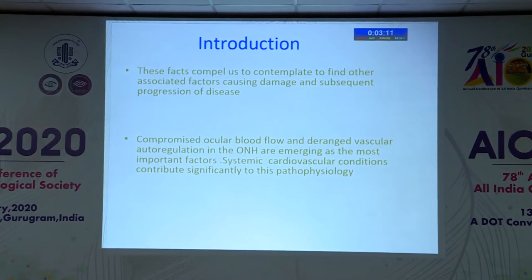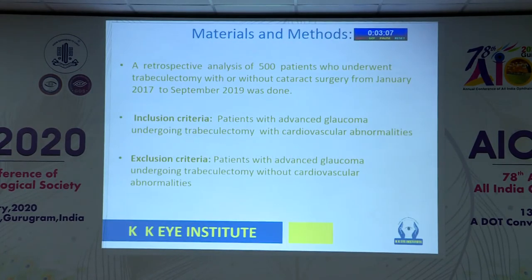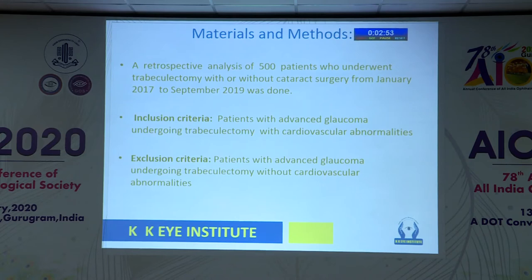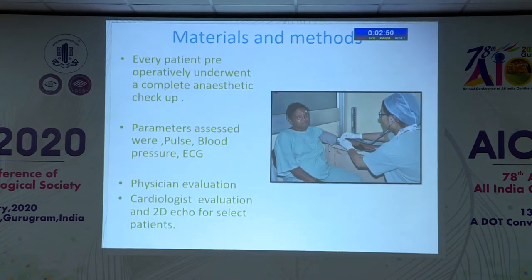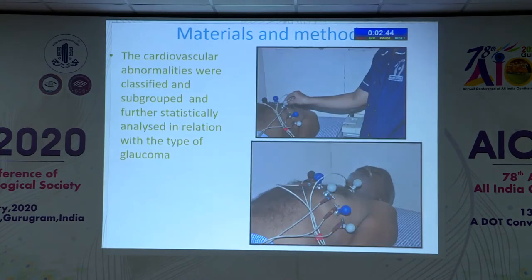Compromised ocular blood flow and deranged vascular autoregulation are emerging as the two most important factors. In my study, a retrospective analysis of 500 patients who underwent trabeculectomy with or without cataract surgery was done. The inclusion criteria was patients with advanced glaucoma with CVS abnormalities; exclusions were those without CVS abnormalities. Every patient underwent preoperatively a complete anaesthetic checkup, a cardiologist evaluation, and a physician evaluation. The CVS abnormalities were classified, subgrouped, and further statistically analyzed in relation to the type of glaucoma.